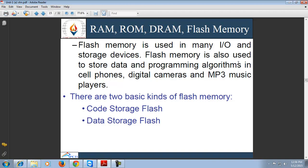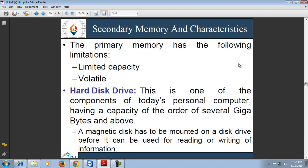This is all about primary memory. The next topic is secondary memory. Primary memory has limitations such as high cost, limited capacity, and being volatile. To overcome these limitations, secondary memory is used. The basic advantages of secondary memory are that it is inexpensive compared to primary memory, has larger capacity, and is non-volatile.